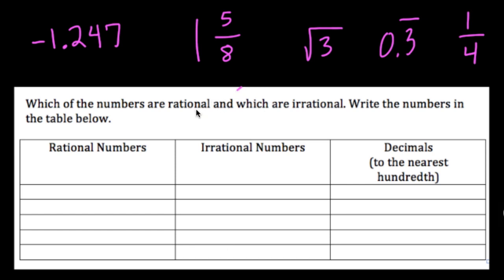So let's pick up the rational numbers first, right? So here we have 1 and 5 eighths, and that, of course, is a rational number. It's a mixed number, and any simple fraction or mixed number is rational. So we can put that over here in our rational column, 1 and 5 eighths.